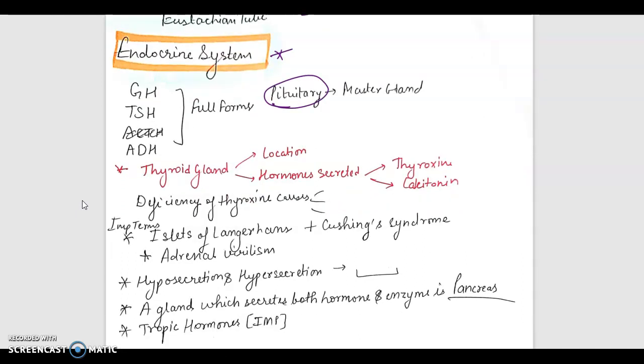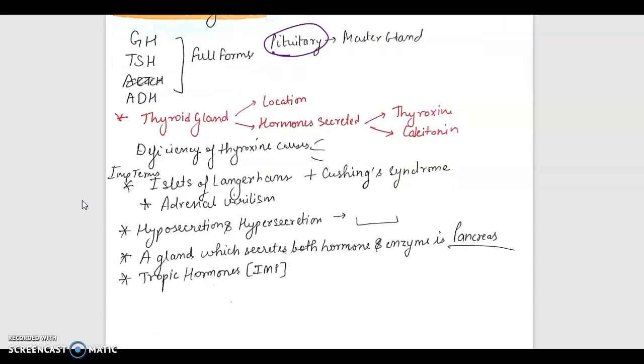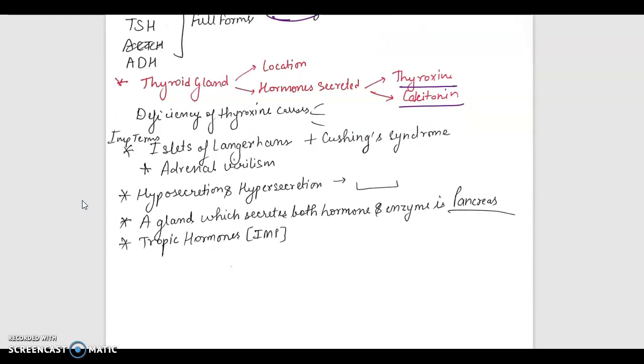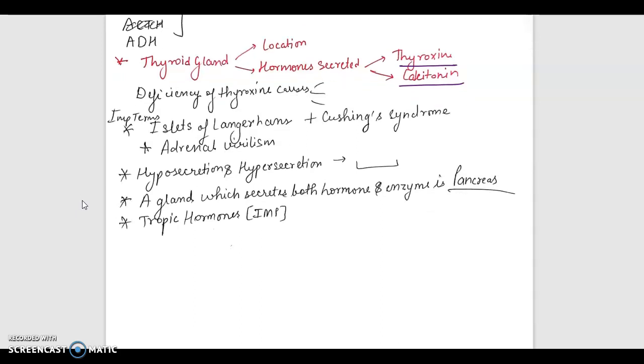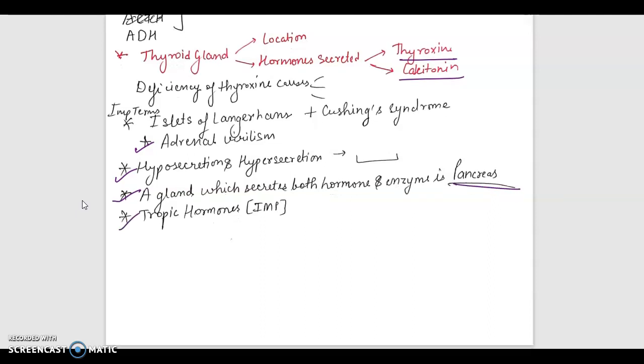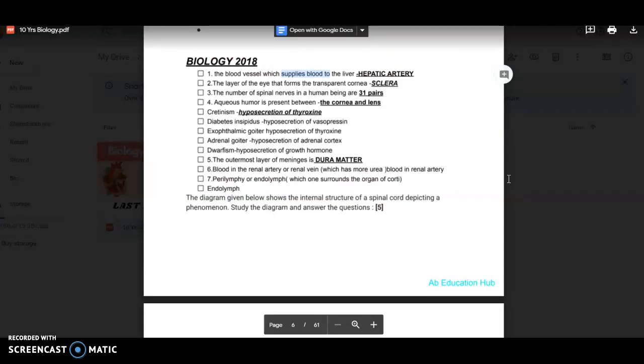Then pituitary gland, that is called the master gland. It controls all the glands present in our body. Thyroid gland, its location, the hormone secreted like thyroxine and calcitonin. The deficiency of thyroxine causes all these diseases which you have to learn. Like simple goiter that is common in hilly areas just because the salt content is very less there. Important terms like islets of Langerhans, then Cushing's syndrome, then adrenal virilism. Hypersecretion and hyposecretion of all these hormones. A gland which secretes both hormone and enzyme is pancreas. Definition of tropic hormones. I'll just show you what questions are asked in board examination. I'm referring to my ebook. We will do 2018 only.